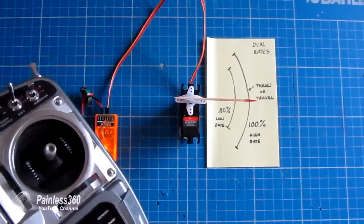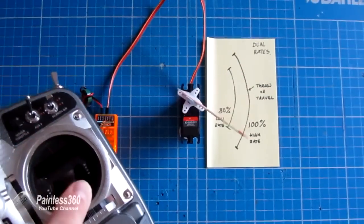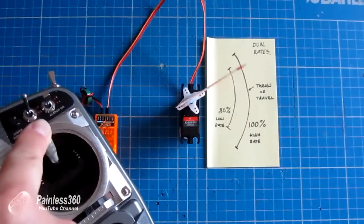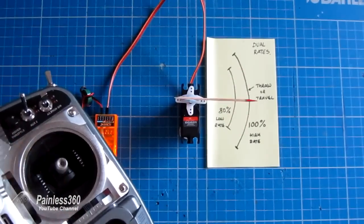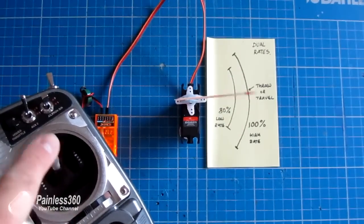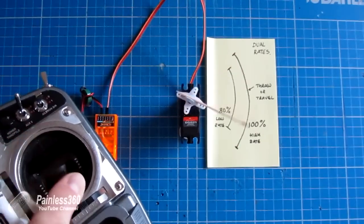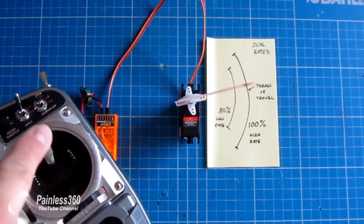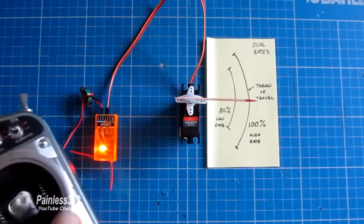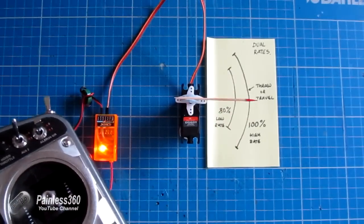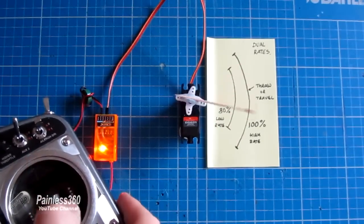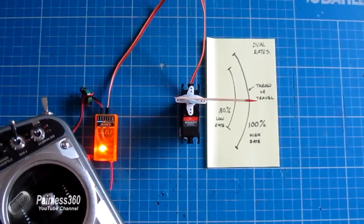Throw or travel or distance is just the amount that a servo moves. So at the moment we're moving about 80% of our full travel, and if I flick the switch on the radio, we now for the same movement on the stick, it's now moving to high rates. So high rates tend to be the rates that gives you the maximum amount of movement. The low rate setting is the one that gives you the smaller amount of movement.